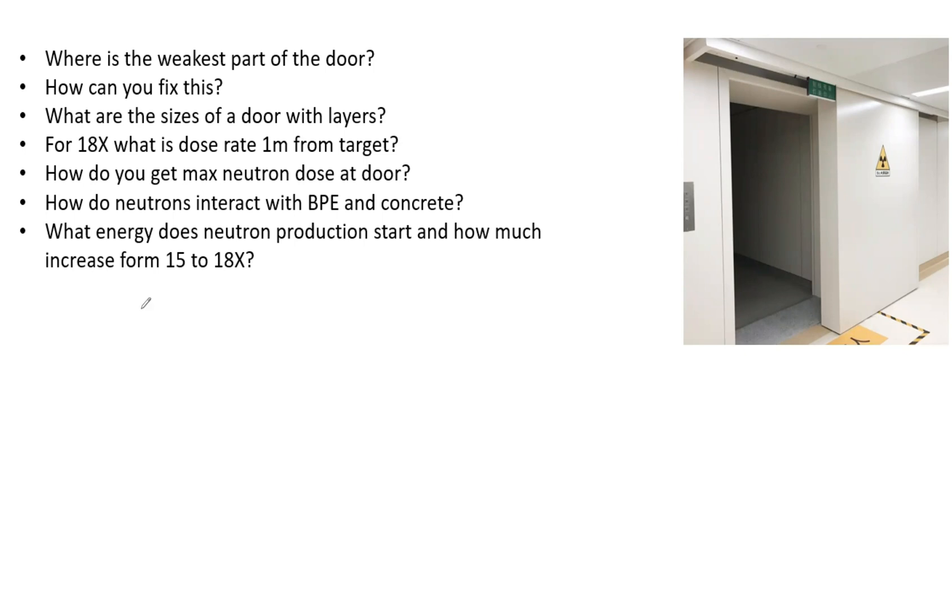To begin, what are the weakest parts of the door? Let's visualize this where we have a wall and we have the door, say for example right here. As you can see, when these two meet there is some overlap, but right here if you had a beam of radiation coming through, this is the path of least resistance where less of it is going to be attenuated.